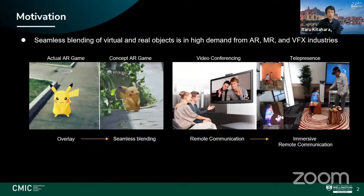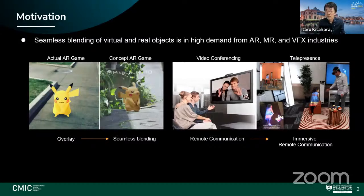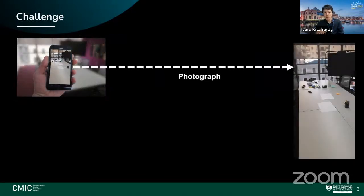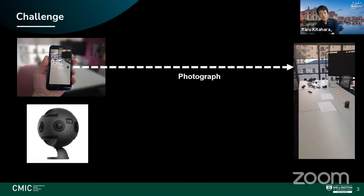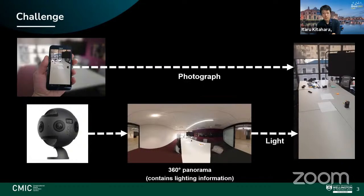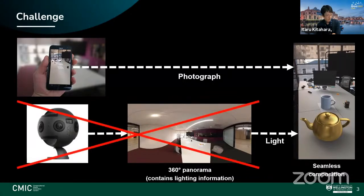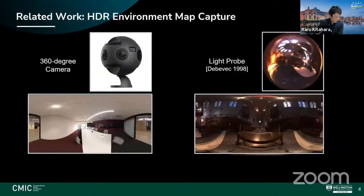The focus of this paper is solving the problem of seamlessly blending digital content into the real world. This is important in many application areas — for example, it would help realize the concept from the original Pokémon Go trailer, where the Pokémon would appear to exist within the environment with high-quality shadows and highlights matching the background photograph. Remote communication is another area where relighting people to match the environment would enhance believability. You could also use a 360-degree camera to provide surrounding lighting information to light virtual objects.